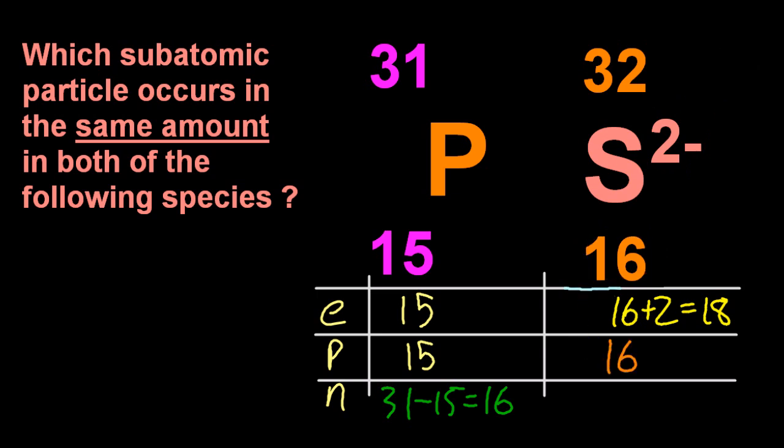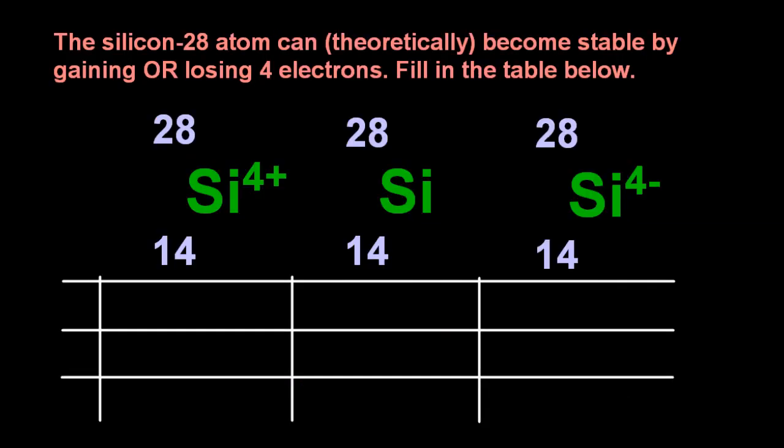The small number is always going to be the protons, though. And the difference is always going to be the number of neutrons. So the electrons could change. But the protons are always the small number, and the difference is always the neutrons. And finally,